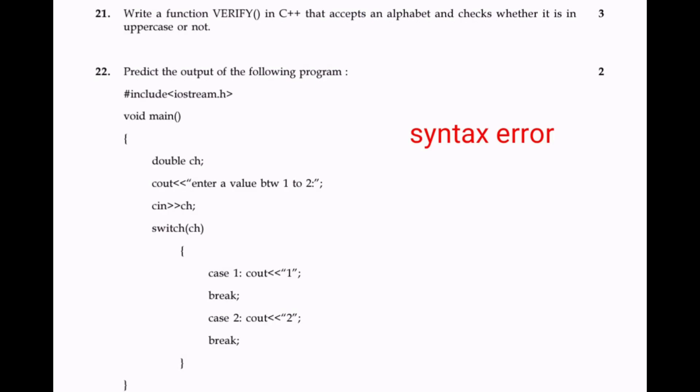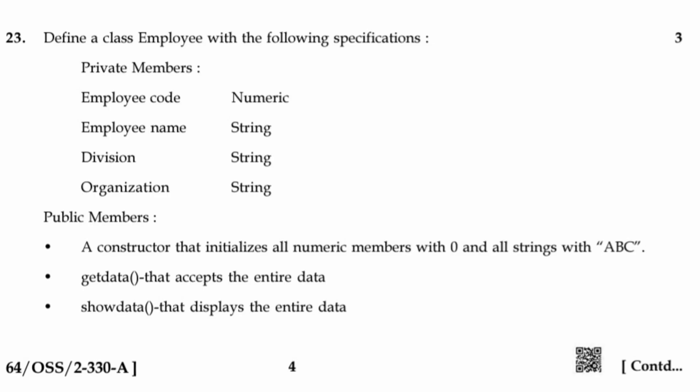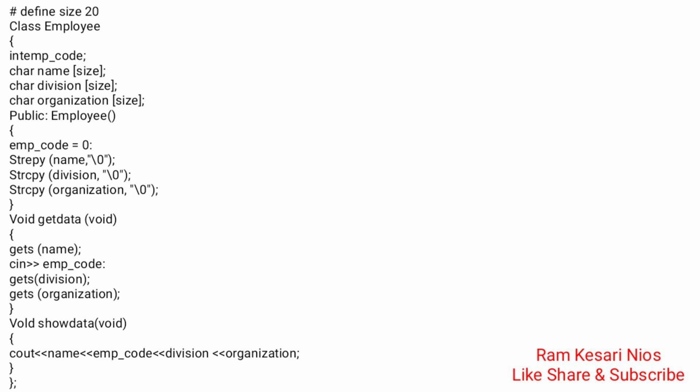Question 22: Predict the output of the following program — syntax error. Question 23: Define a class employee with the following specification. Private members: employee code (numeric), employee name (string), division (string), organization (string). Public members: a constructor that initializes all numeric members with 0 and all strings with ABC; a get_data function that accepts all data; and a show_data function that displays all data. Pause the video and see the answer.